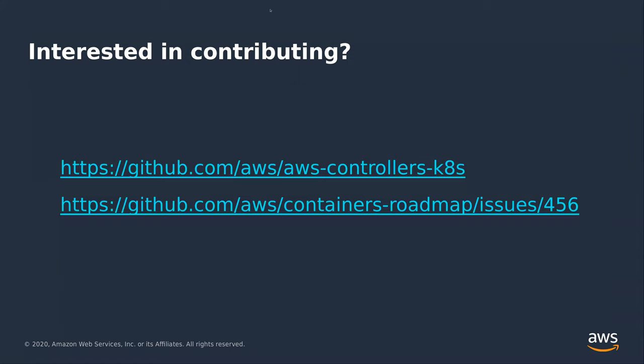Thank you very much for a wonderful presentation. We have a few questions. How different is this from EKS? ACK is entirely different from EKS. EKS is an AWS service that provides a managed control plane for Kubernetes, and recently a more managed data plane with managed node groups. ACK is a set of Kubernetes native custom controllers that allow a Kubernetes-native way of managing resources in the AWS APIs — completely separate from EKS.